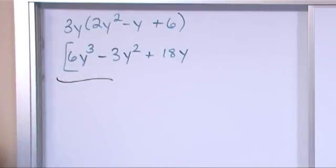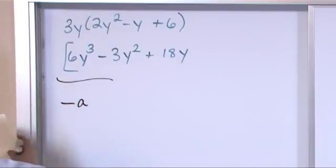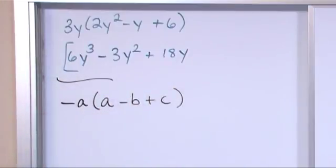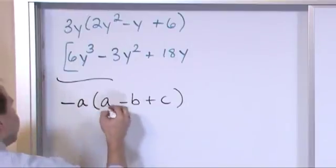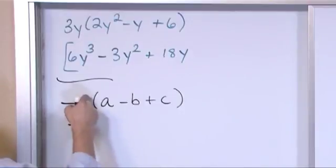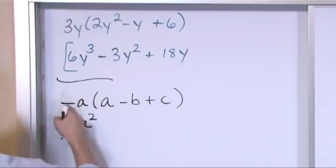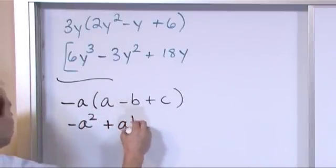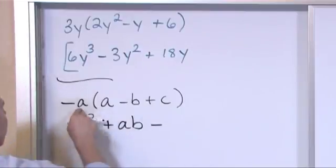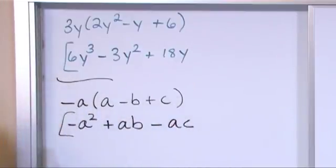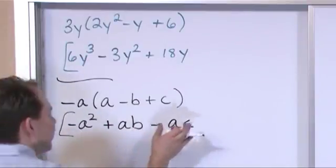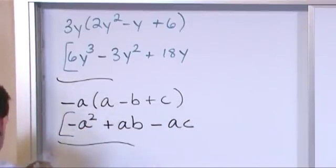What if we have negative a times (a minus b plus c)? We multiply term by term. Negative a times a gives negative a squared — add exponents, one plus one is two. Negative times negative is positive, a times b is written as ab. Then negative times positive is negative, a times c is ac. The answer is negative a squared plus ab minus ac. You might be tempted to combine these but none of them are like terms — ab is different from ac, which is different from a squared.